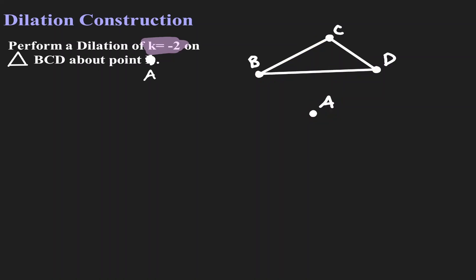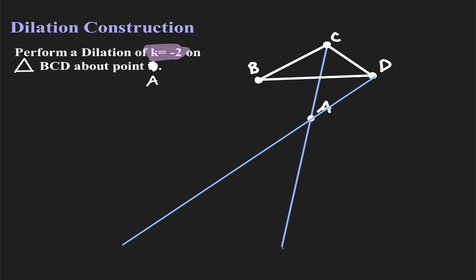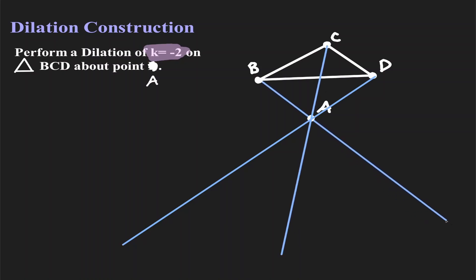The first thing we want to do is create our points of trajectory — lines from each vertex towards the point of dilation. Let's create a line from D towards A, then do the same for point C, creating a line from C towards A, and another line from B towards A.